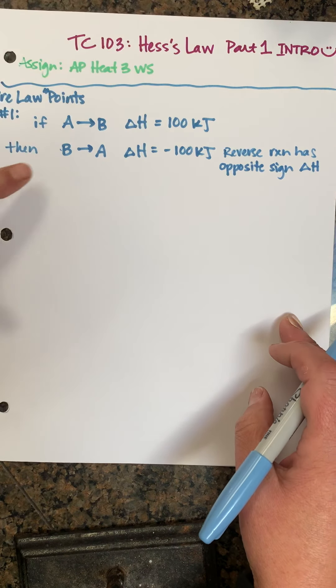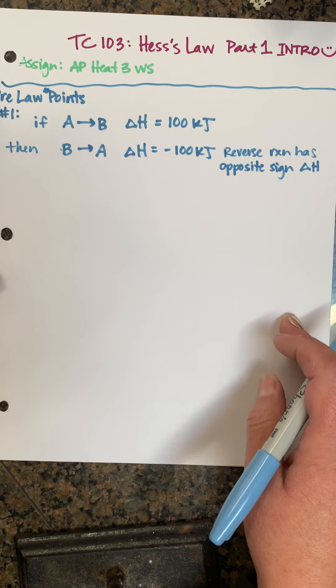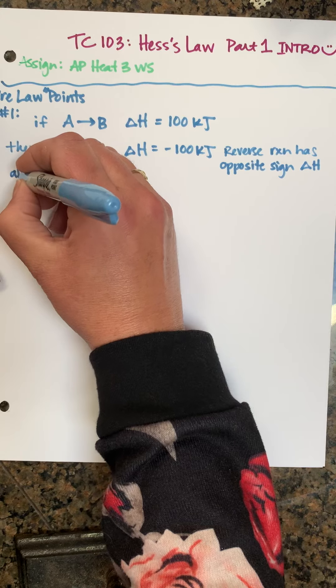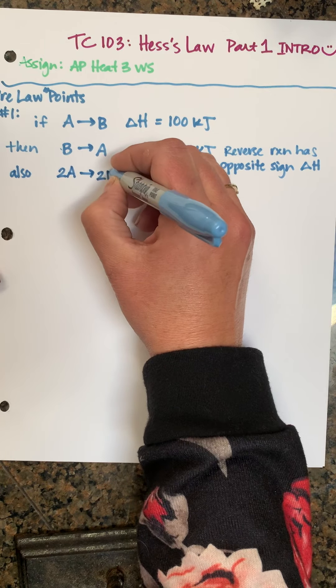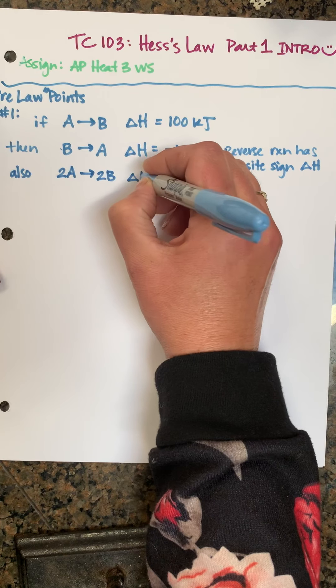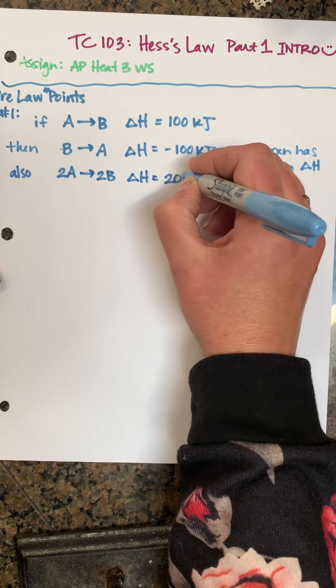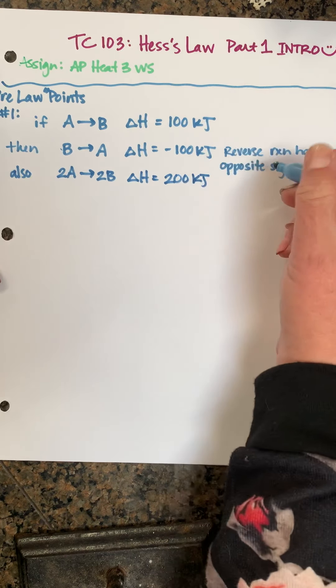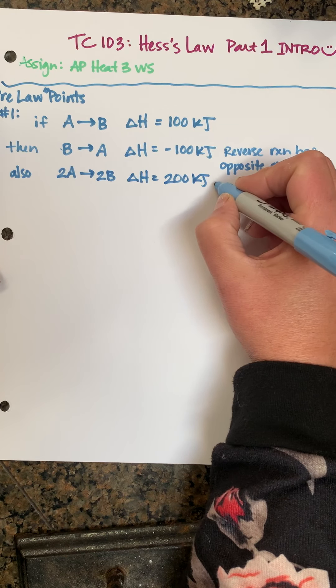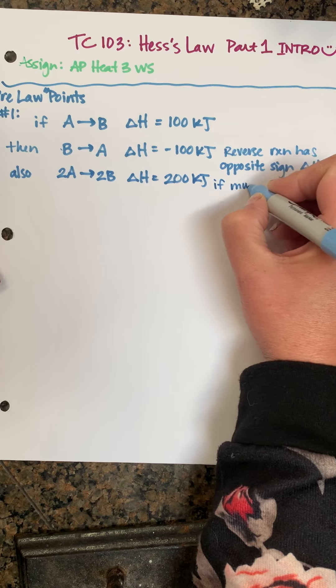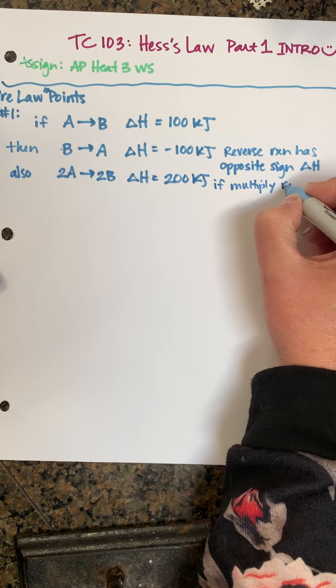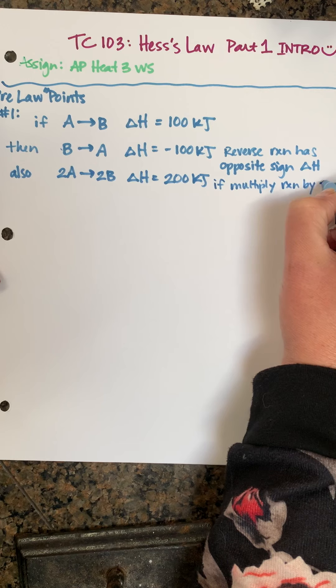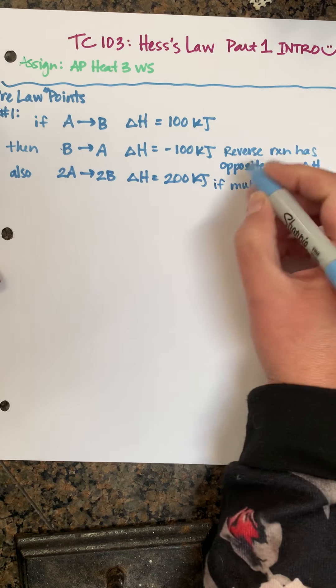We can also say 2A making 2B, the ΔH would be 200 kilojoules. So in words we would say if we multiply the reaction by n, whatever number we're multiplying by, then we also multiply the ΔH by n.